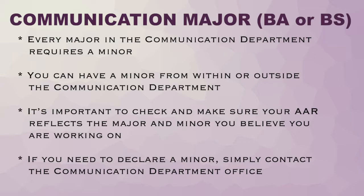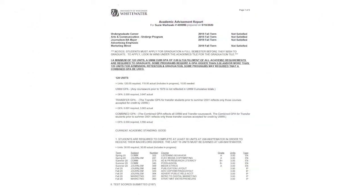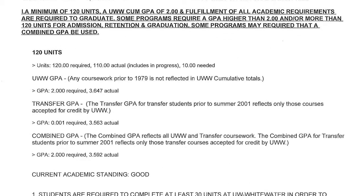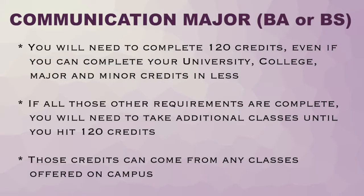The next area of the AAR shows your progress toward the 120 credit total that is required of every UW-Whitewater student, and is a national standard at most universities across the country. You will need to complete 120 credits even if you can complete your university, college, major, and minor requirements in less. If all those other requirements are complete, you will need to take additional classes until you hit 120 credits.